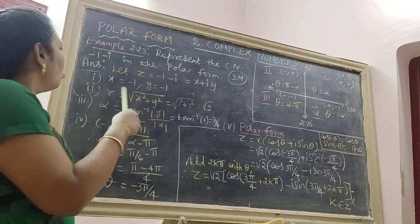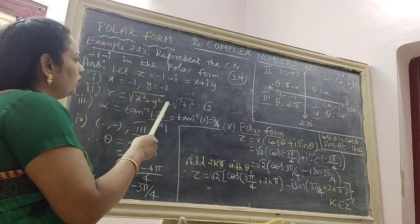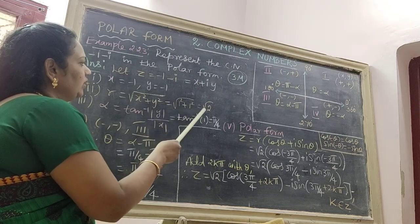Already we know that r is equal to root of x squared plus y squared. Therefore, substitute x and y, we get the answer root 2.